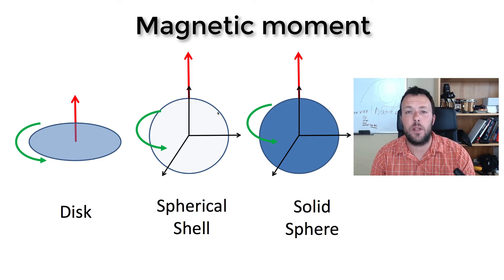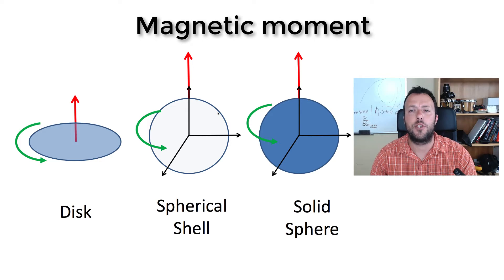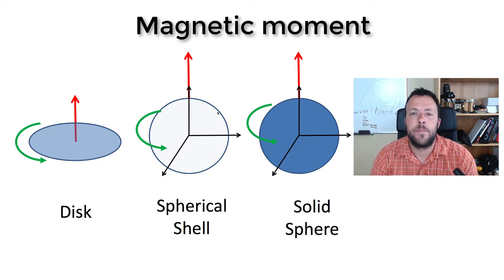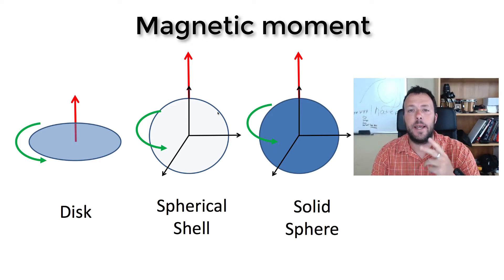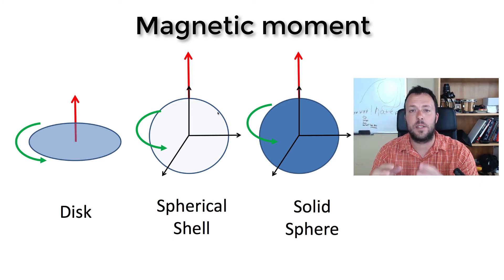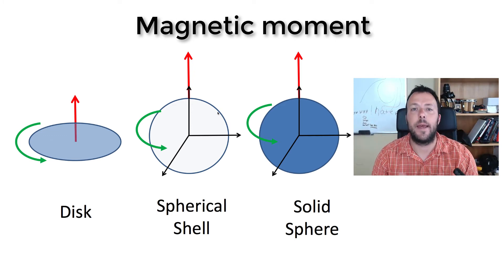I'm going to place a charge Q on them and that charge is going to be uniformly distributed on the three objects. We're going to look at a disk, a spherical shell, and also a solid sphere. We're going to spin that object at some angular frequency omega and I'll show you how to calculate the magnetic moment in all of these three cases.